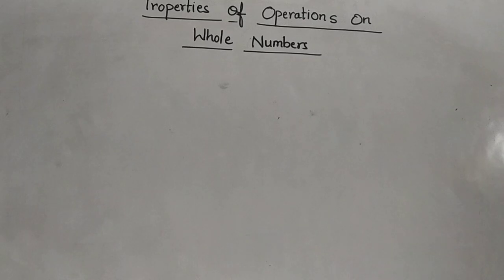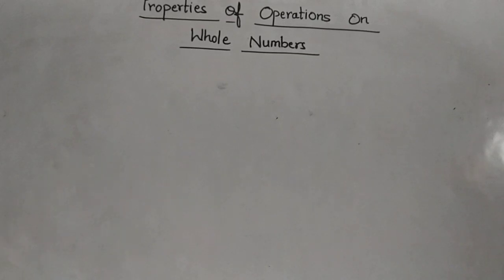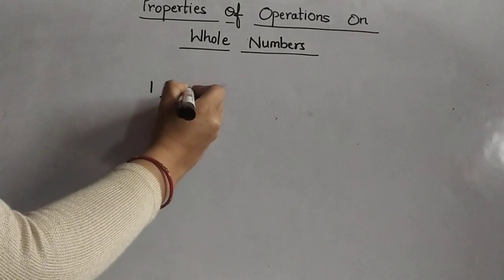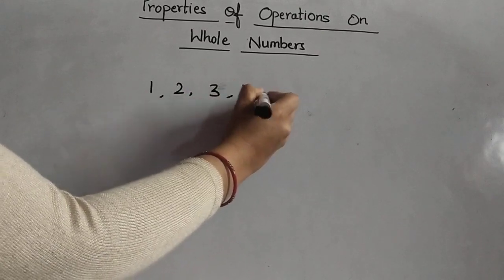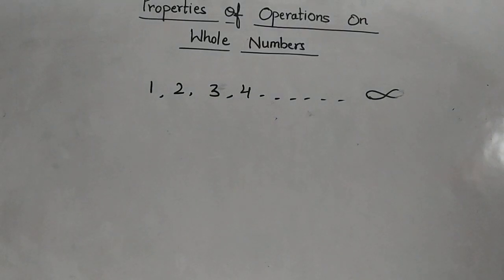Hello students, let us discuss a new topic: properties of operations on whole numbers. First, let us understand what are the whole numbers. We will start by looking at natural numbers. As you all know, we represent the counting numbers by 1, 2, 3, 4, and so on till infinity. These counting numbers are known as natural numbers.